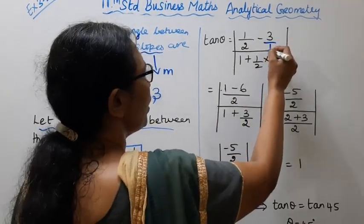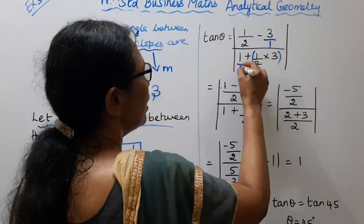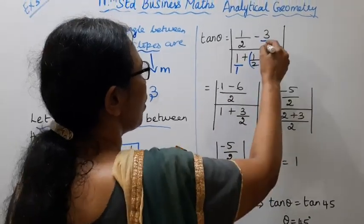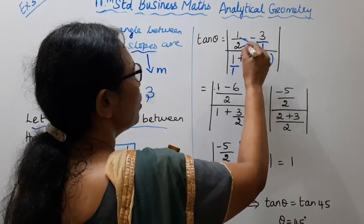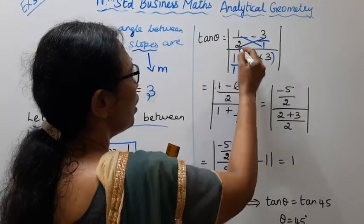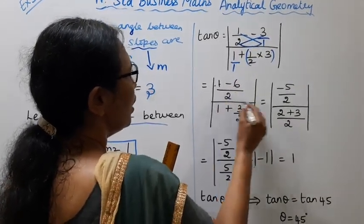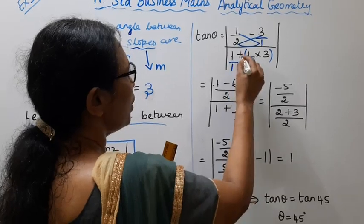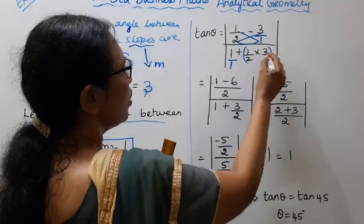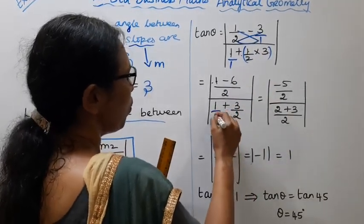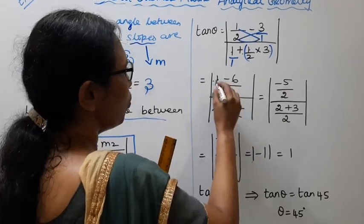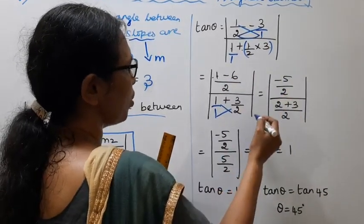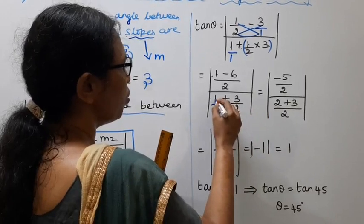It is divided by 1. Now cross multiply: 1 into 1 is 1, minus 2 times 3 is 6, divided by 2 into 1 is 2, divided by 1 plus 1 into 3 is 3 by 2. Now 1 by 1, cross multiply, 1 minus 6 is minus 5 by 2, divided by 2 1s are 2.